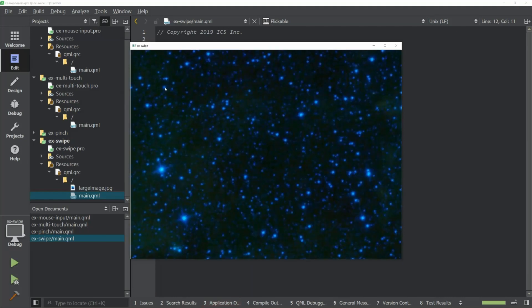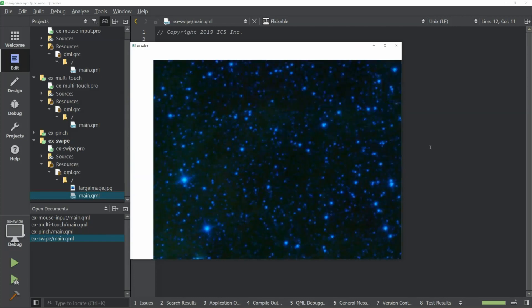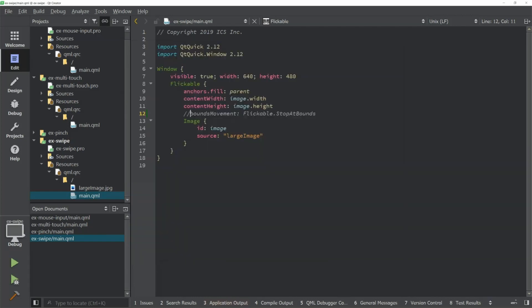So now that we're at the corner, when I flick this way, notice how it just pulls away. So that's the difference between those two bounds.